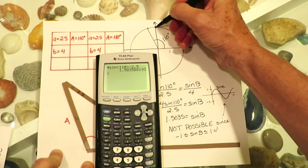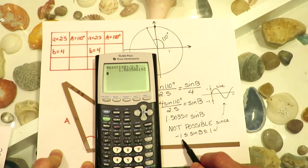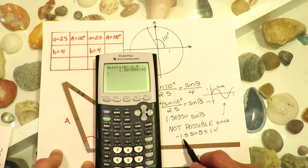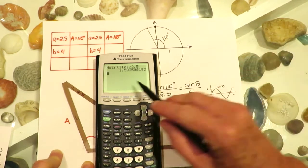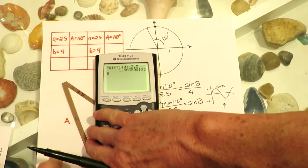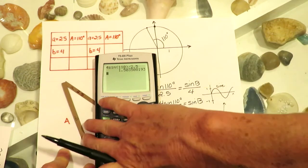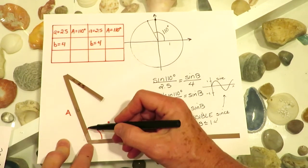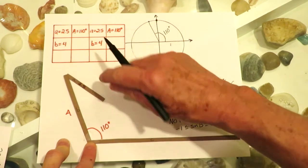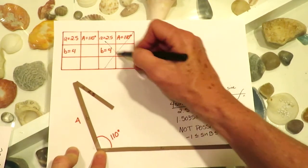The highest y gets is at 90 degrees and it equals 1. Sine should be between 0 and 1 when working with triangle angles, and we got a value greater than 1 — it's not possible to have a sine greater than 1. So there's no possible triangle. You can also see this geometrically: if this is a 110-degree angle and B has to be 4, but A is only 2.5, there's no way it's going to reach to form a triangle. No triangle whatsoever.